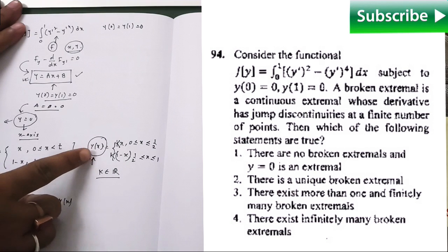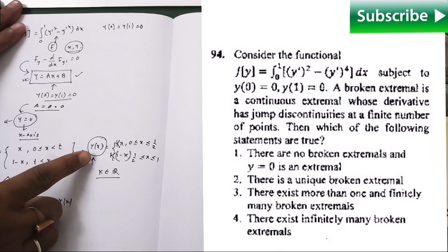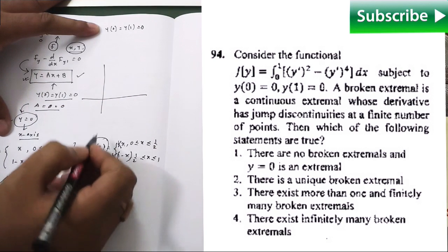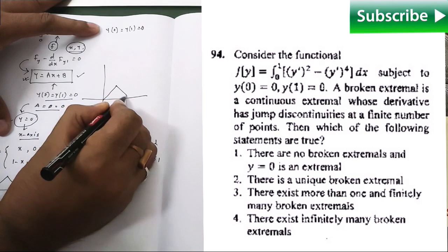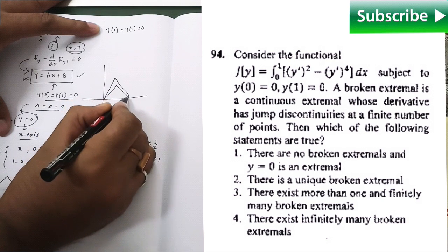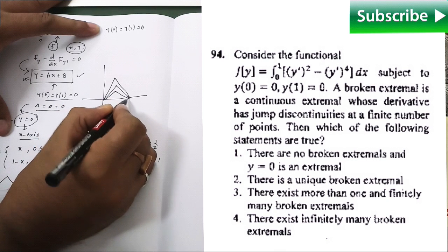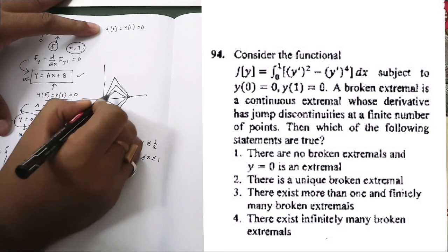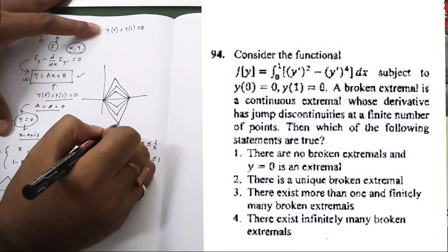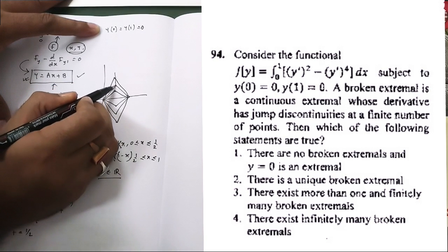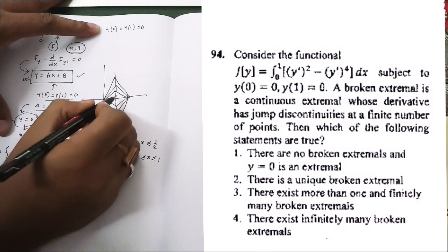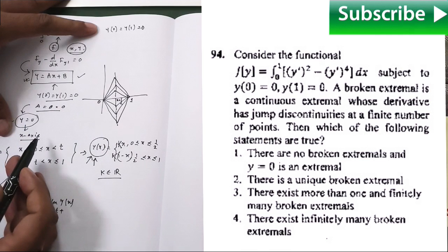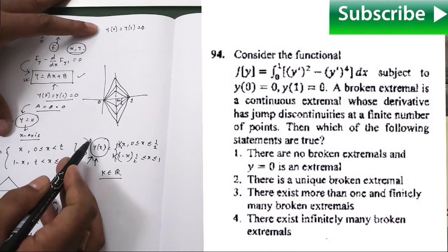And in that case, the number of extremals is infinite. Because if you try to draw the graph of this function, then what you are having is something like that. Depending upon the value of k, you are having all these extremals. And this is your x equal to half. So the number of extremals is infinite and all the given conditions are fulfilled by this family of curves.